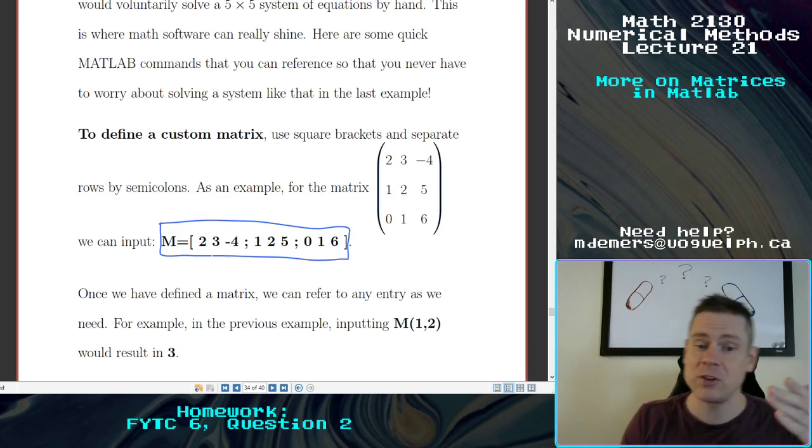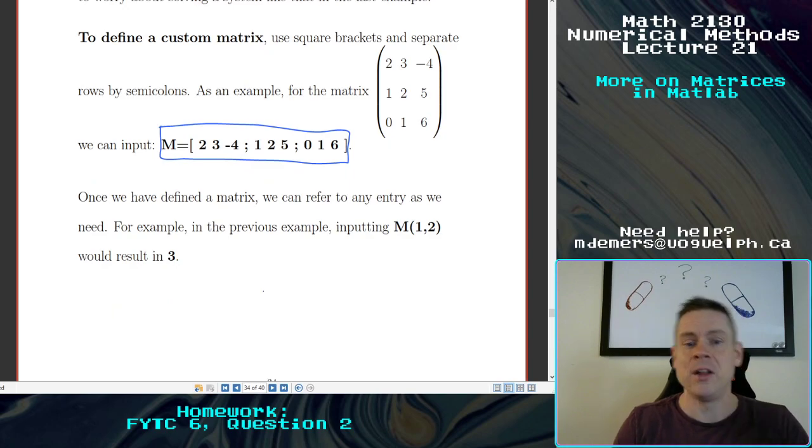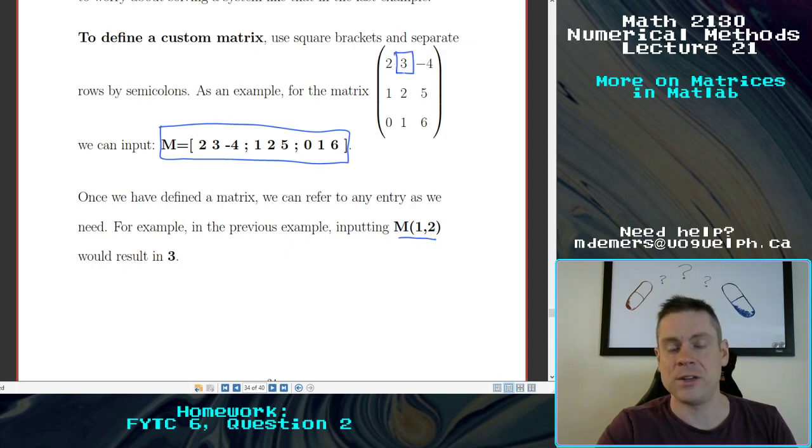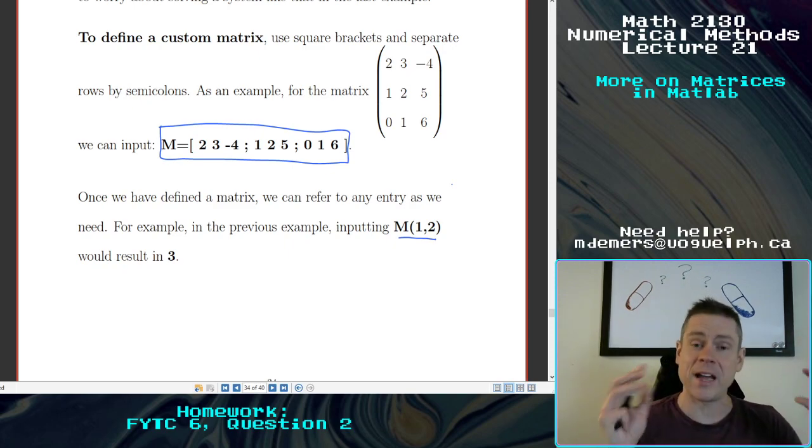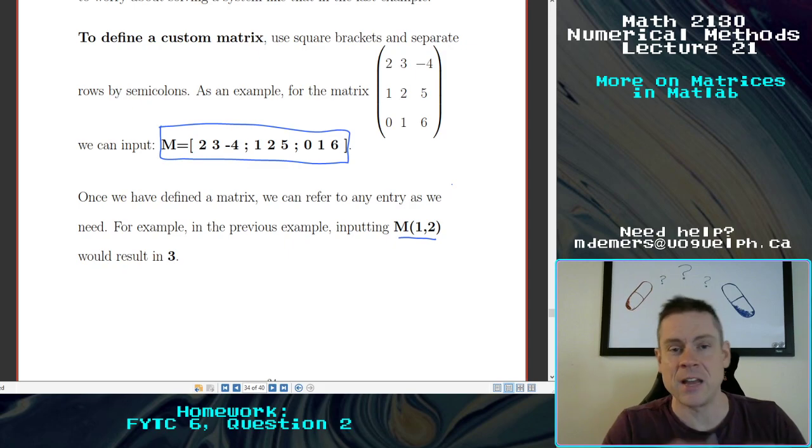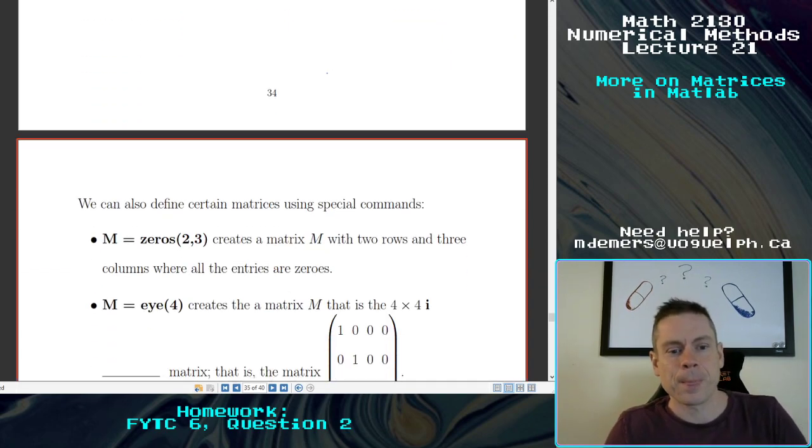Once you've defined a matrix, you can refer to those entries the same way that we did a couple of classes ago. If you were to simply put in M(1,2), you'd end up with three, this entry right there. That would be output. So that way, once you've got a custom matrix defined, you can refer to any of the entries super easily, the way that you'd expect to.